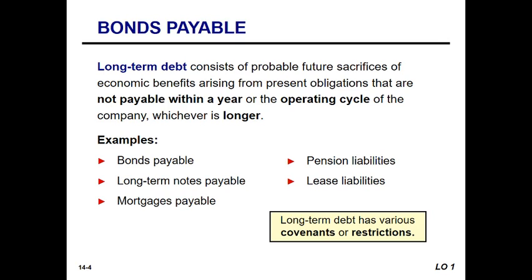Long-term debt will perhaps have certain covenants and restrictions attached to it. These are for the protection of both the lenders and the borrowers, and those restrictions are found in the bond indenture or the note agreement. They will include information related to amounts authorized to be issued, interest rates, due dates, call provisions, security for the debt, and sinking fund requirements.